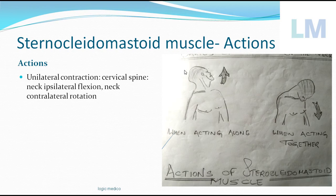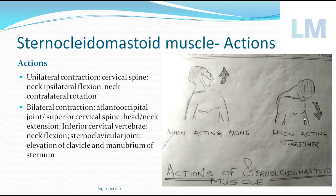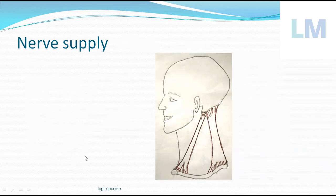When both muscles contract together — bilateral contraction — at the atlanto-occipital joint there is slight extension in the uppermost portion, but predominantly the inferior cervical spine undergoes flexion, meaning the neck bends forward. This is called neck flexion. Additionally, there is slight elevation of the clavicle and manubrium sterni at the sternoclavicular joint, though this usually goes unnoticed.